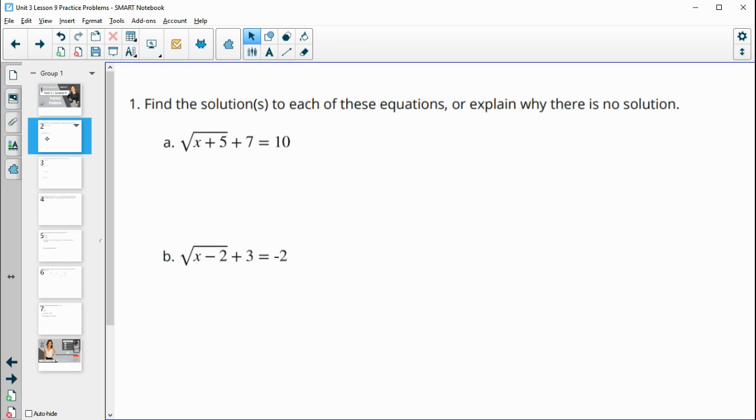Number one asks us to find solutions to each of these equations or explain why there is no solution. We're going to isolate this radical part because we can't get the 5 or the x out from under there. So we're going to subtract 7 from both sides so that we get this root isolated. 7 minus 7 is 0, 10 minus 7 is 3.